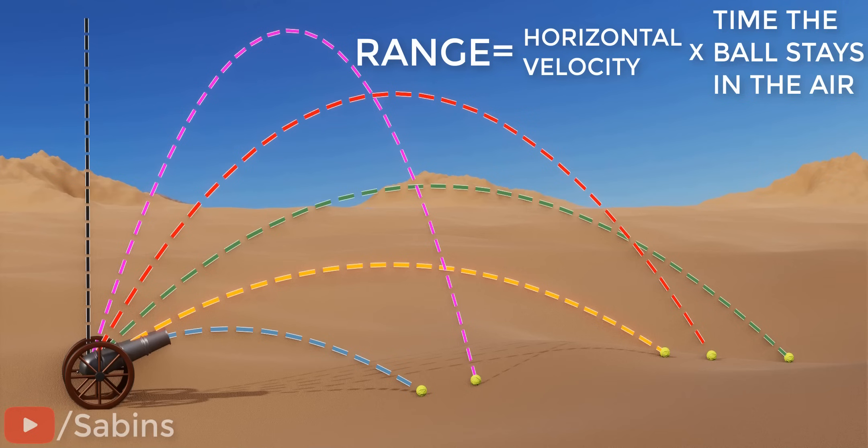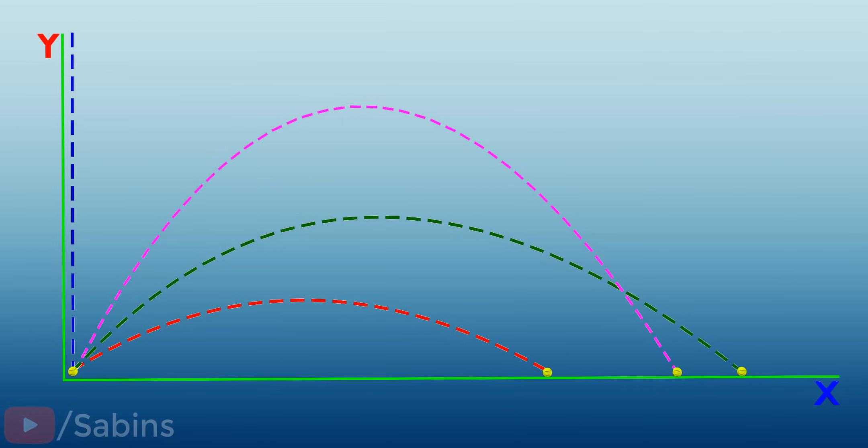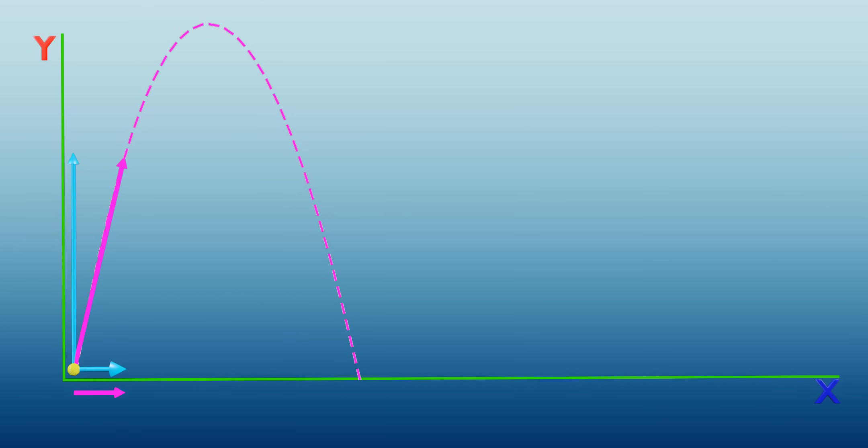The time the ball spends in the air decreases as you decrease the angle. However, the horizontal velocity keeps on increasing as you reduce the angle.